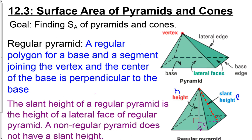Today's lesson is 12-3 surface area of pyramids and cones. For the most part we'll be dealing with regular pyramids where we don't have to worry about different slant heights.